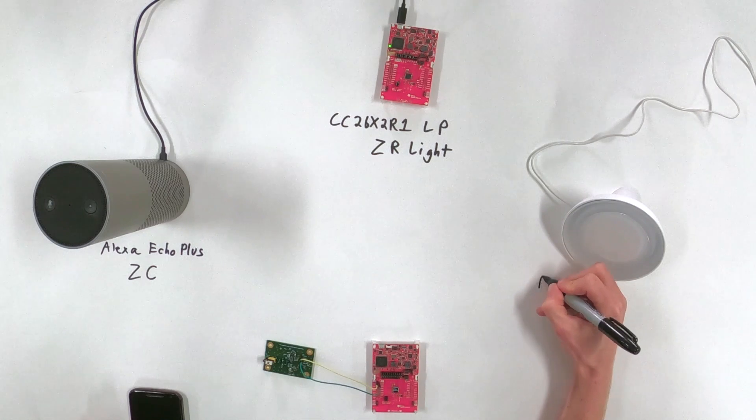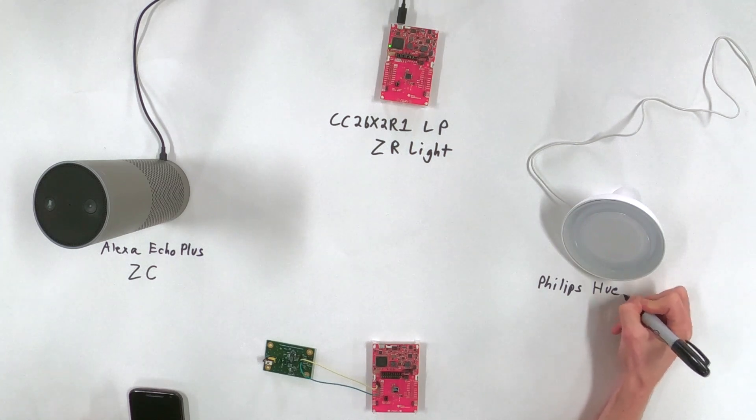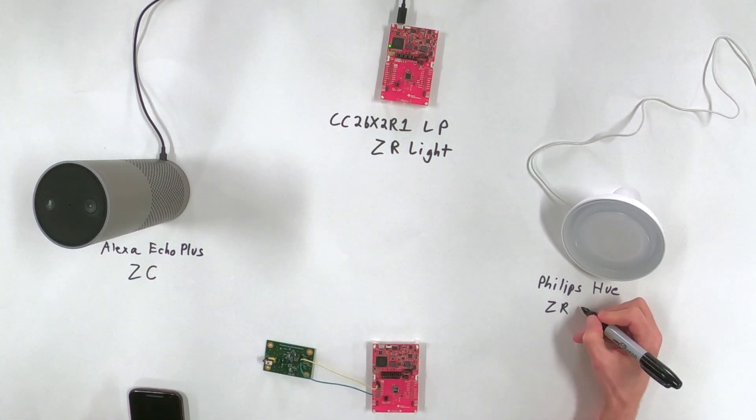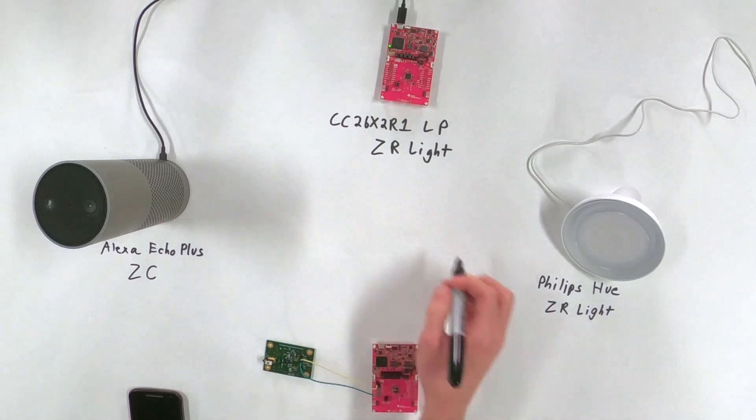And over here we have a Philips Hue. So that is also, that's an off the shelf. Yeah, you can get this at any store, anybody who provides these online, wherever. And that's also going to be acting as a Zigbee router light. So we've got two lights.